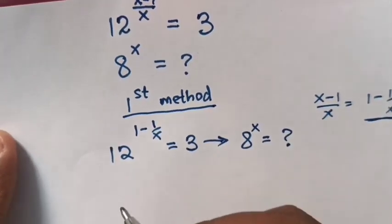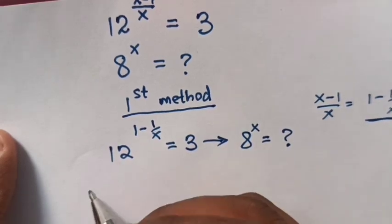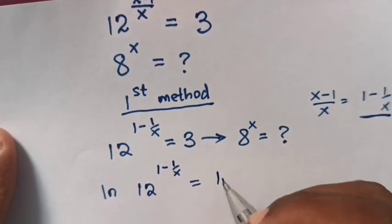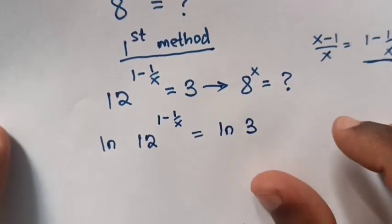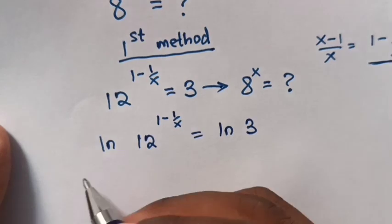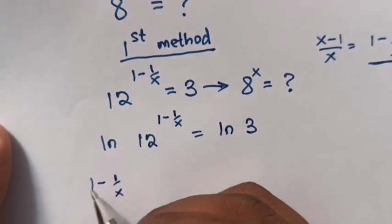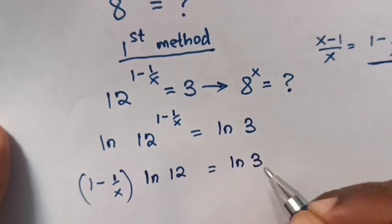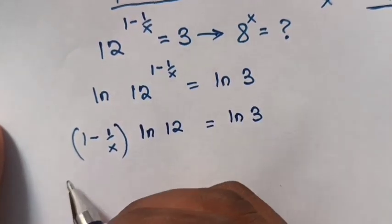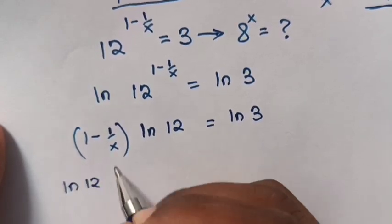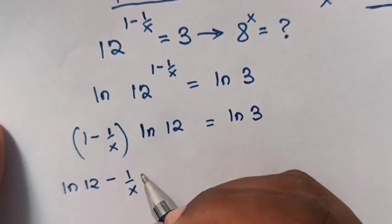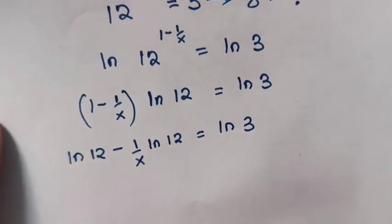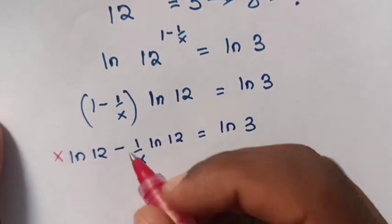From our equation 12 power (1 minus 1 over x) equals 3, we apply ln on both sides. So ln of 12 power (1 minus 1 over x) equals ln 3. The power is multiplied to ln 12, so (1 minus 1 over x) times ln 12 equals ln 3. We multiply into the bracket: ln 12 minus (1 over x) ln 12 equals ln 3. Next step, we multiply by x on both sides to remove the fraction.